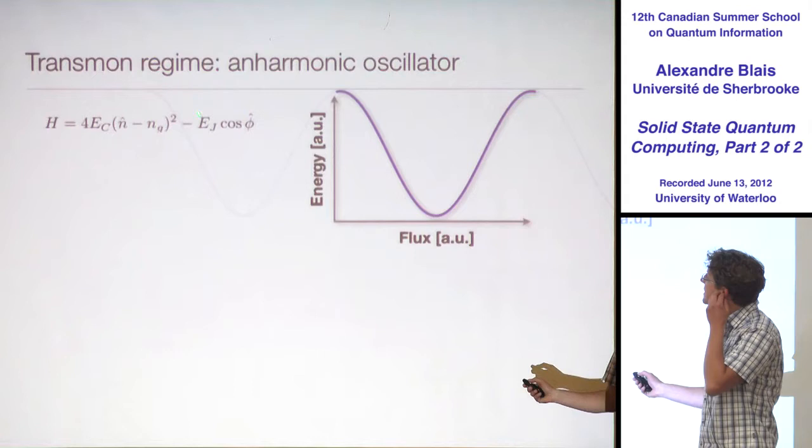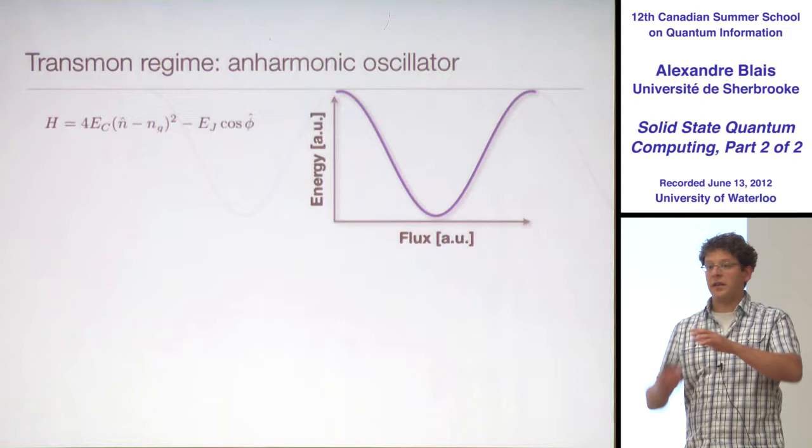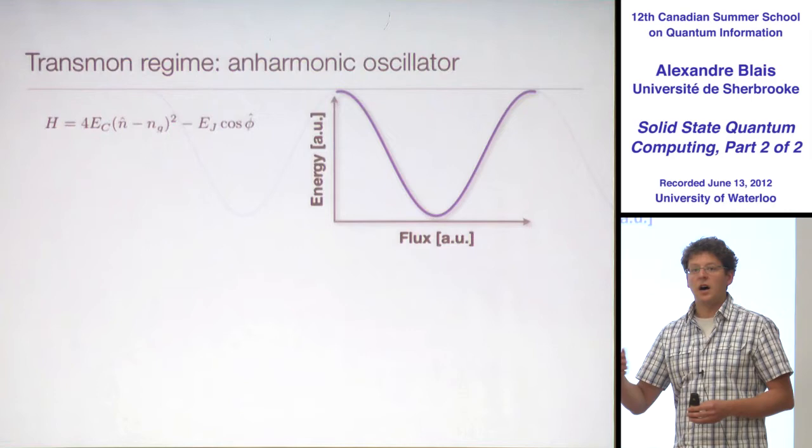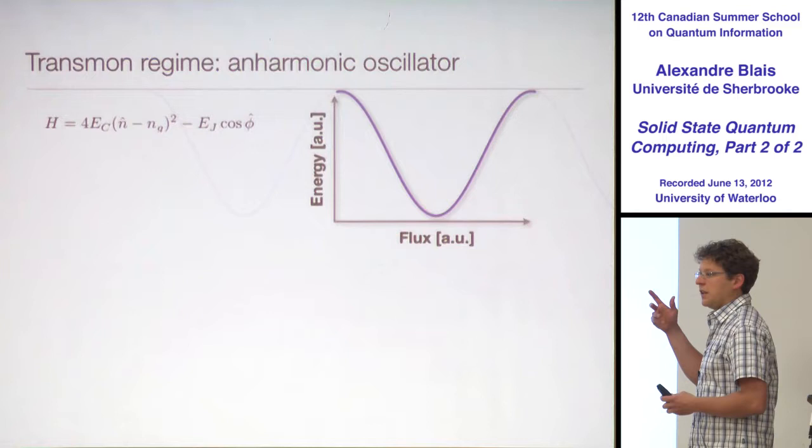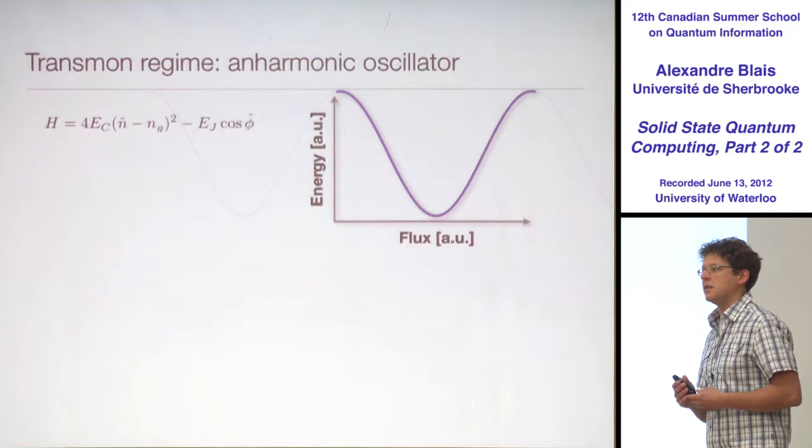We just saw that the transmon regime is when EC is small compared to EJ. And what we would like now — we have these spectra, which gave you the dependence of these levels on NG — is to give you a bit more intuition, at least a mathematical intuition, of how you should think about these circuits.